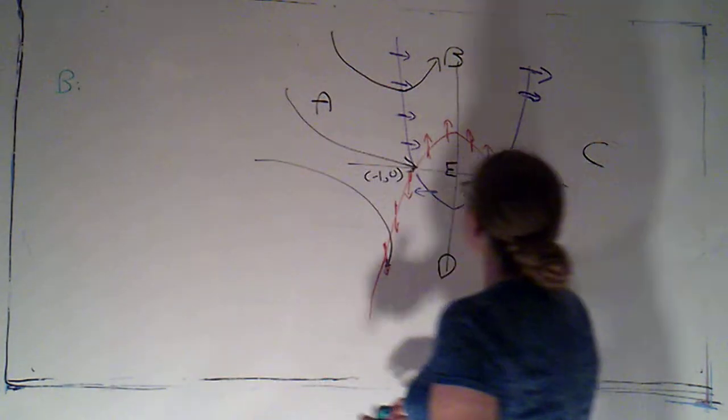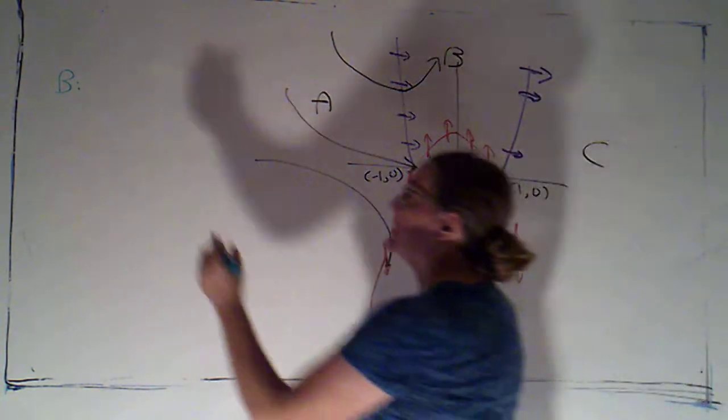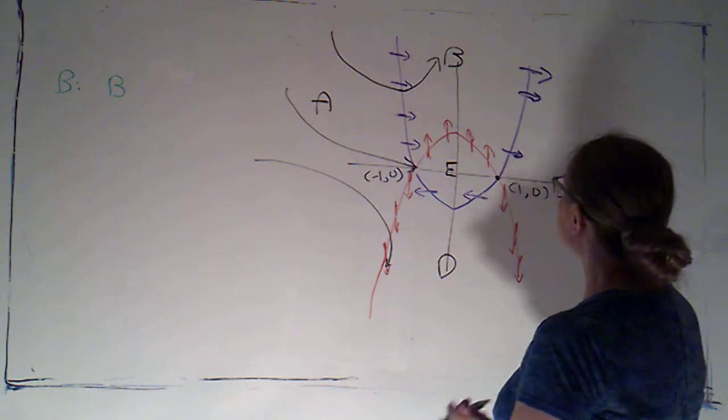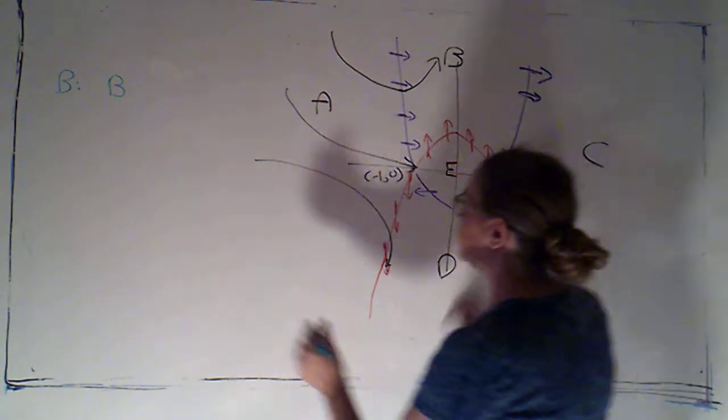So for region B, now that is an infinite region because it doesn't have a top boundary. So I want to see could I just stay in B? Could I pass to an adjacent region? So there are three regions that are adjacent: A, E, and C.